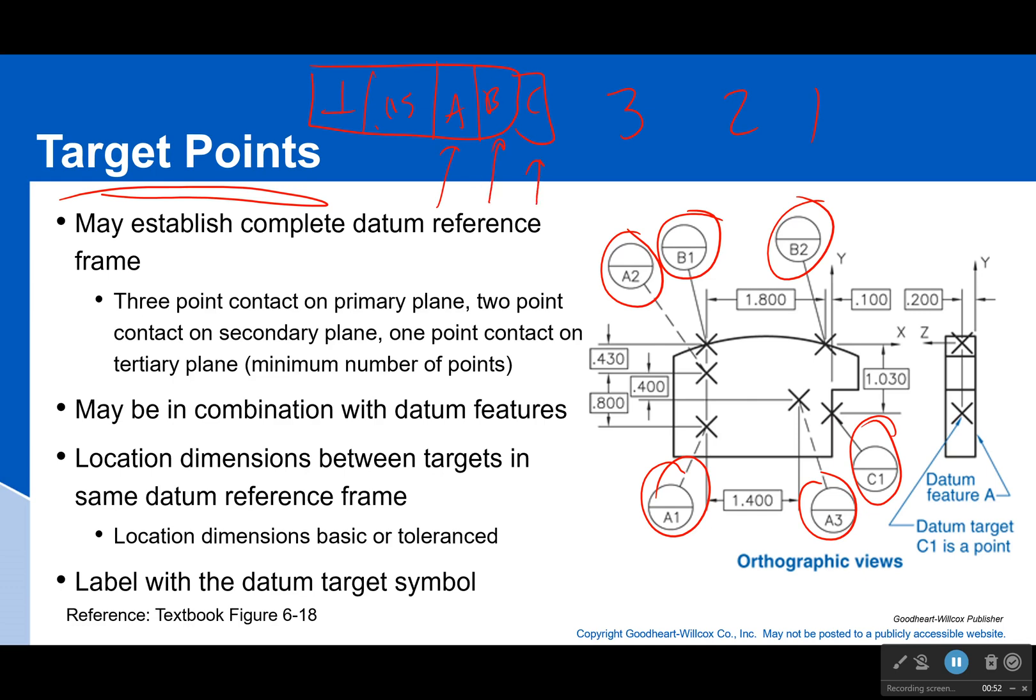Why is that? Each point gets rid of a degree of freedom. Your first plane gets rid of three degrees of freedom, so you need three points. Second gets rid of two degrees of freedom, you need two points. And third gets rid of one degree of freedom.